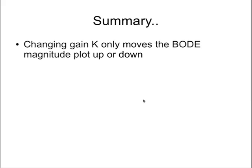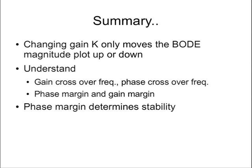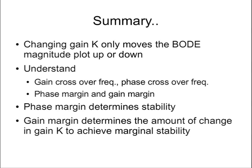In summary: changing k only moves the Bode magnitude plot up or down. You need to understand gain crossover frequency, phase crossover frequency, phase margin, and gain margin. Only the phase margin determines stability, while the gain margin determines the change in gain k required to achieve marginal stability.